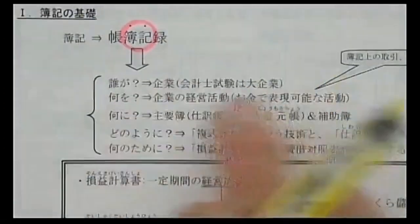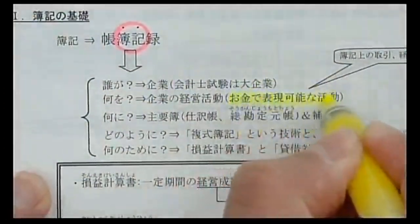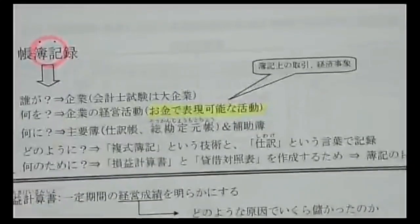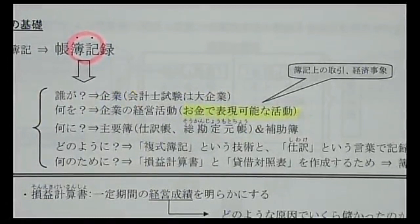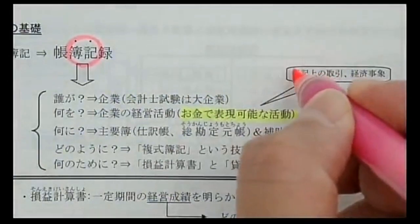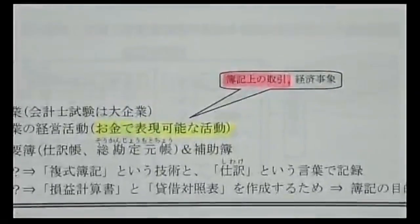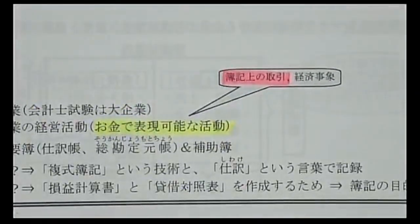日商簿記3級は小さな株式会社を前提としていますが、会計士試験は大企業を前提としています。記録するのは企業の全活動ではなく、お金で表現することができる活動です。こういったお金で表現可能な活動を簿記上の取引と呼びます。